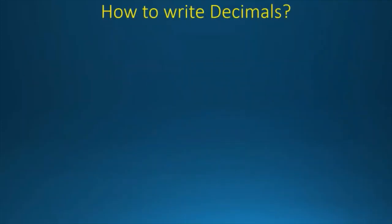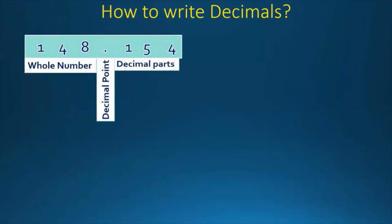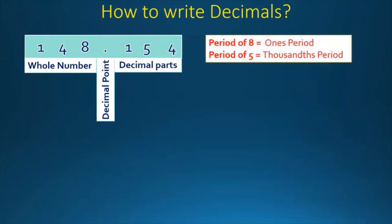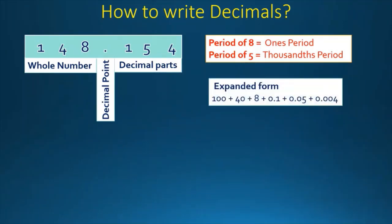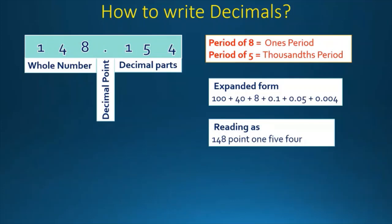Now let's talk about how to read a decimal. We will take the same example again: 148.154. We want to know what the whole number is, what the decimal point is, and what the decimal part is. The 8 is in the ones period and the 5 is in the thousandths period. The expanded part is 100 plus 40 plus 8 plus 0.1 plus 0.05 plus 0.004. We read it as one hundred forty-eight point one five four.